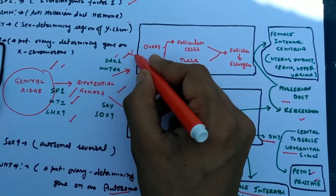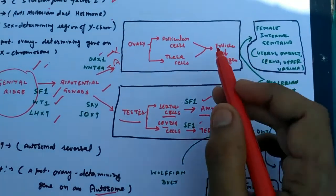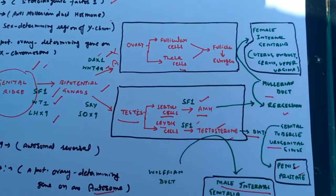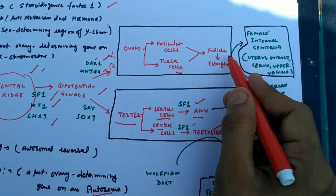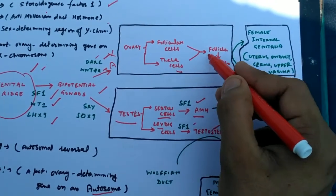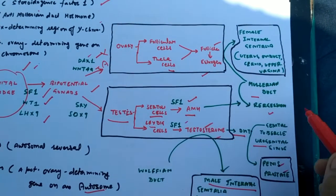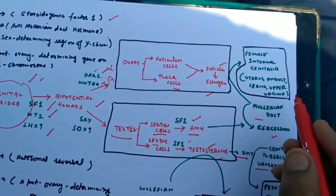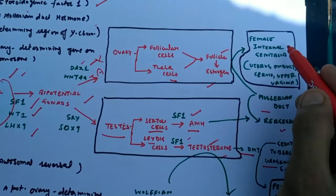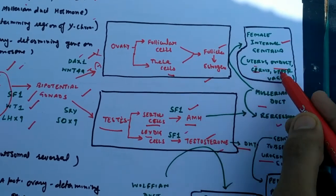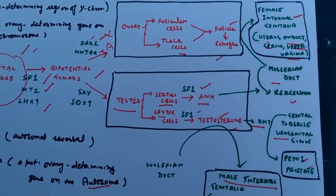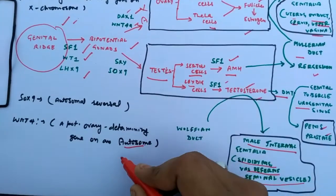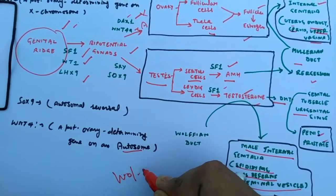DAX1 is a potential ovary-determining gene on the X chromosome. Follicle cells and theca cells are formed around the ovum. The follicle cells secrete estrogen, which promotes differentiation of the Müllerian duct. The Müllerian duct then differentiates into female internal genitalia: uterus, oviduct, cervical canal, and upper vagina.